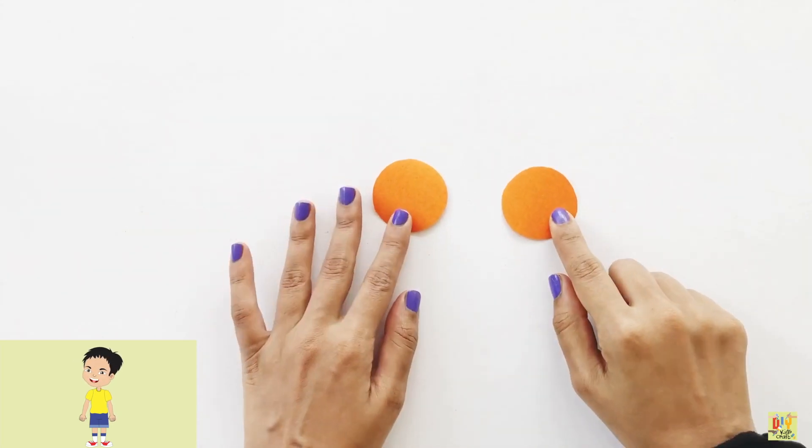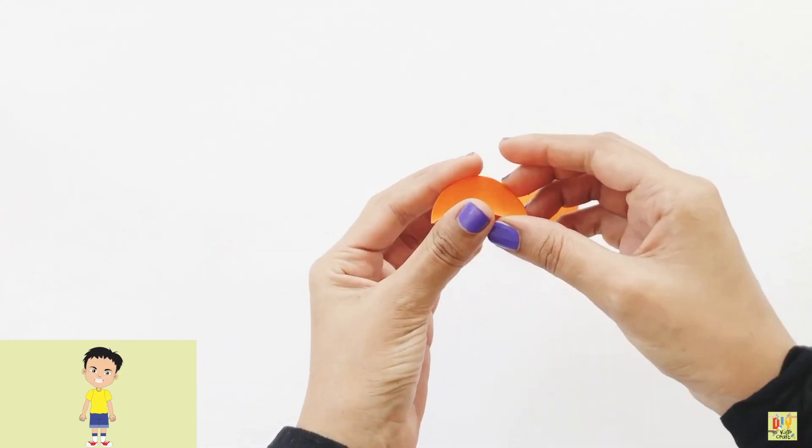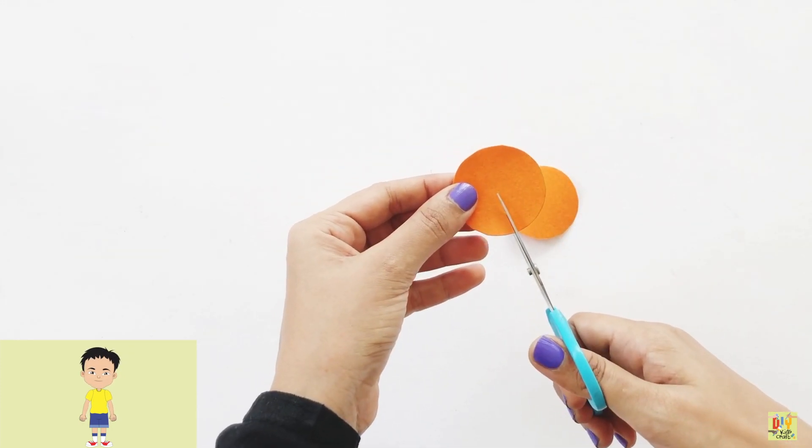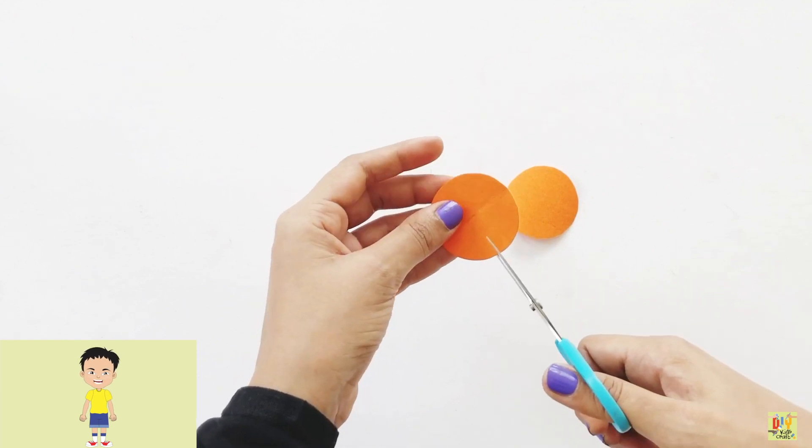Now we need to make the ears of our paper monster. Make sure that you have two small circles. Then cut it into a pac-man shape or a c-shape. Be careful using the scissors, okay?